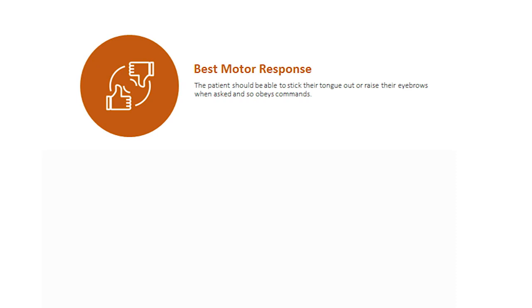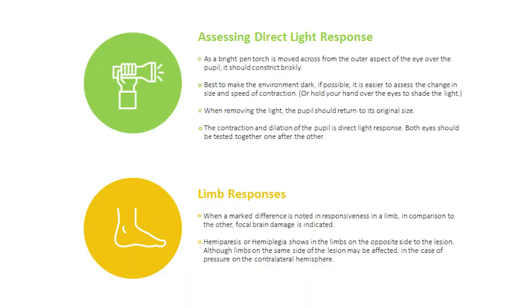Both eyes should be tested together, one after the other. Limb Responses — when a marked difference is noted in responsiveness in a limb compared to the other, focal brain damage is indicated. Hemiparesis or hemiplegia shows in the limbs on the opposite side to the lesion, although limbs on the same side as the lesion may also be affected in the case of pressure on the contralateral hemisphere.